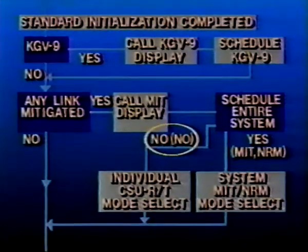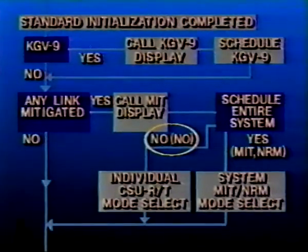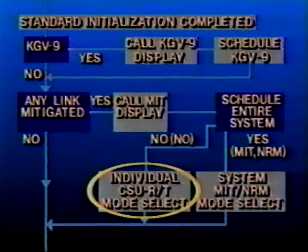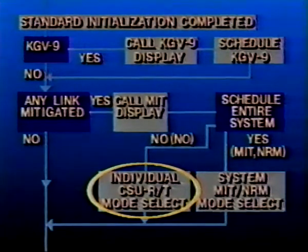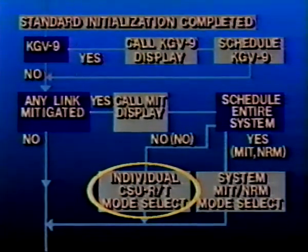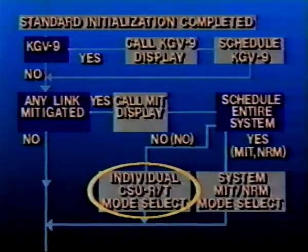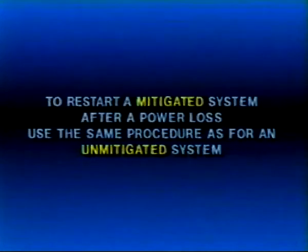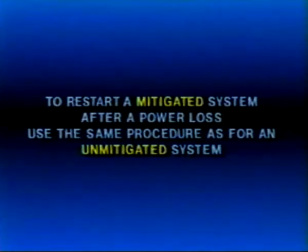Select a mixed mode by typing NO and pressing the return key. When the mixed mode is selected, it is necessary to individually select either the mitigated or normal mode for the CSU and each RT transmitter and receiver. To restart a mitigated system after a power loss, use the same procedure as for an unmitigated system. The system will recover to the conditions existing when power was lost.